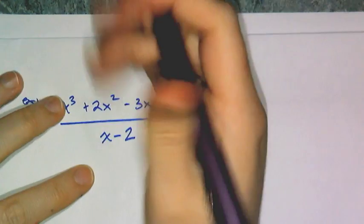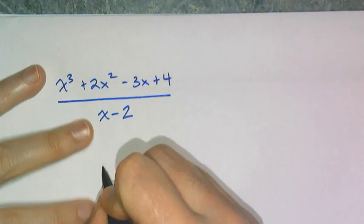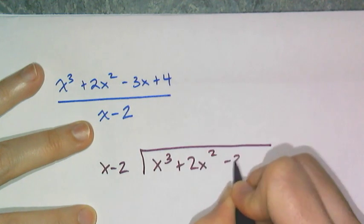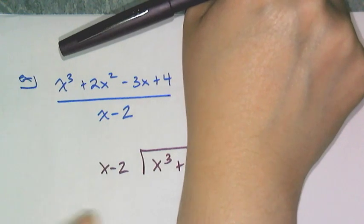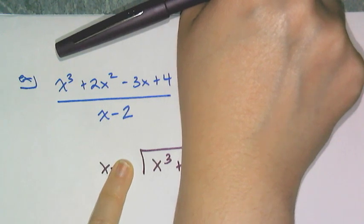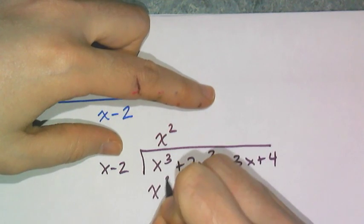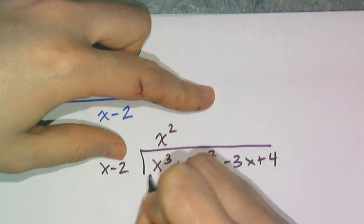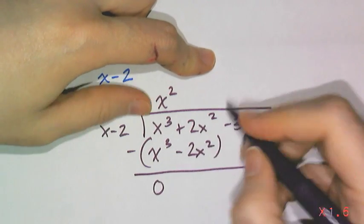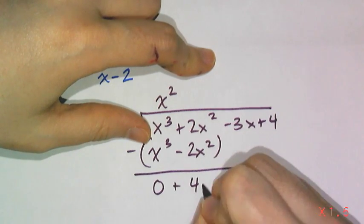I can also show the division written as a long-division format — don't be intimidated, it's the exact same thing. I have x − 2 on the outside and x³ + 2x² − 3x + 4 underneath. I take it one term at a time, ignoring the −2 and focusing on x. What do I multiply x by to get x³? That's x². I multiply x − 2 by x², giving x³ − 2x². I subtract: x³ minus x³ is 0, and 2x² minus −2x² is +4x².